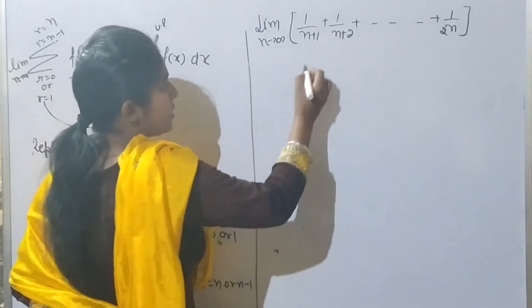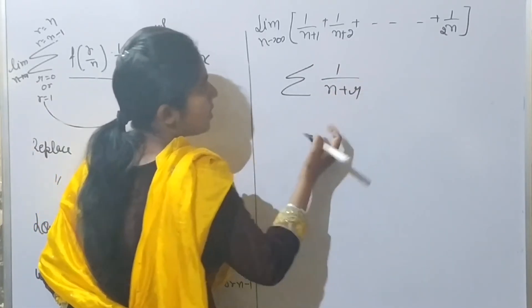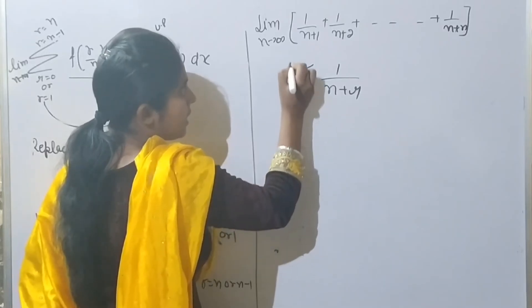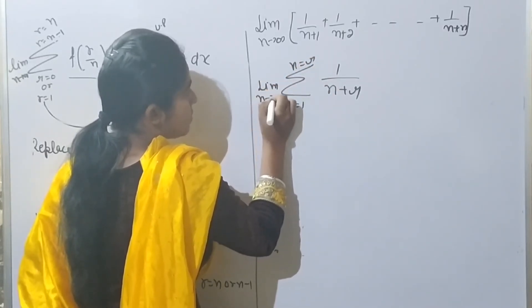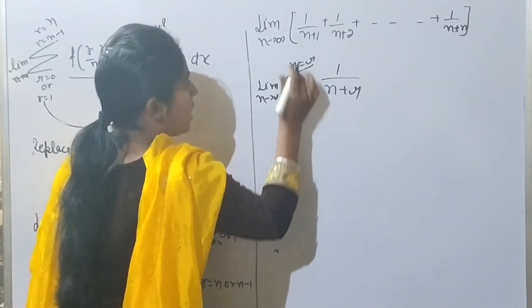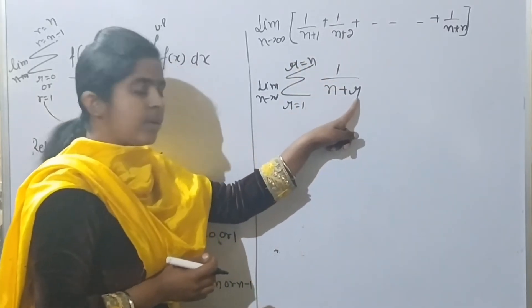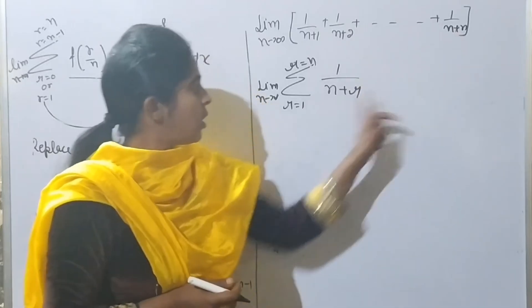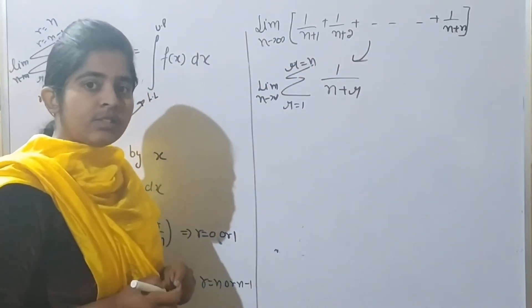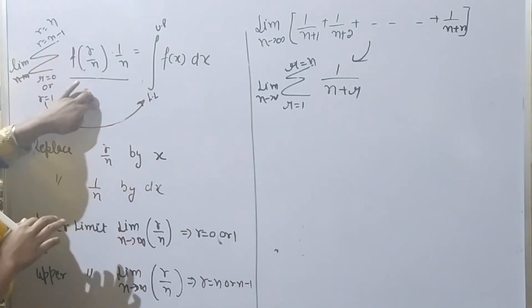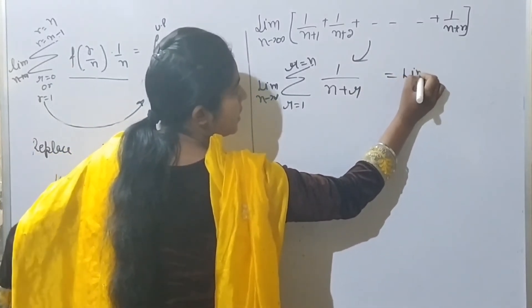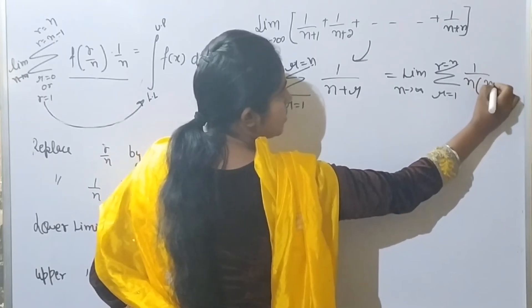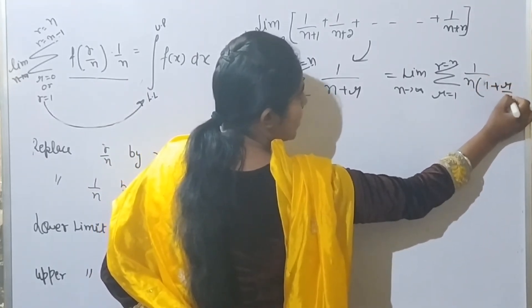Let's look at the general term. I can write this as 1 upon (n+r): n+1, n+2, up to n+n. Where is my n going? For r=1, r=2, and so on. I will write 1/(n+1), 1/(n+2), up to 1/(n+n). Now I will write the form: r by n and 1 by n. I'll write limit n tends to infinity, summation r=1 to n. If I take n common, I get 1/(1 + r/n). So this is my function.